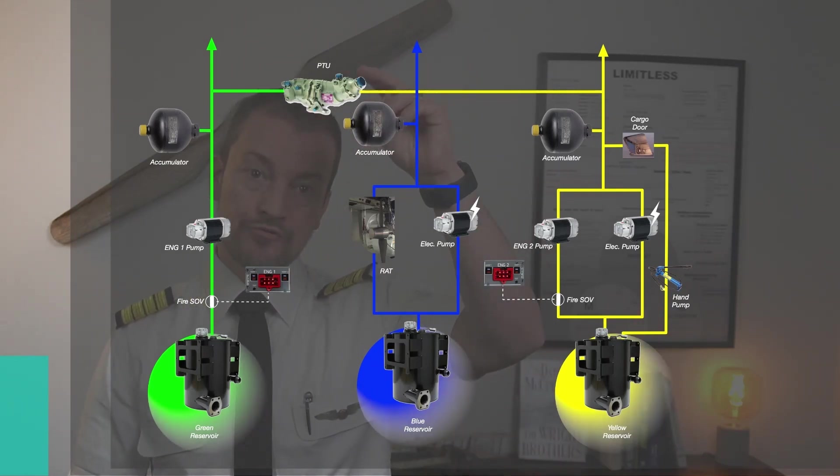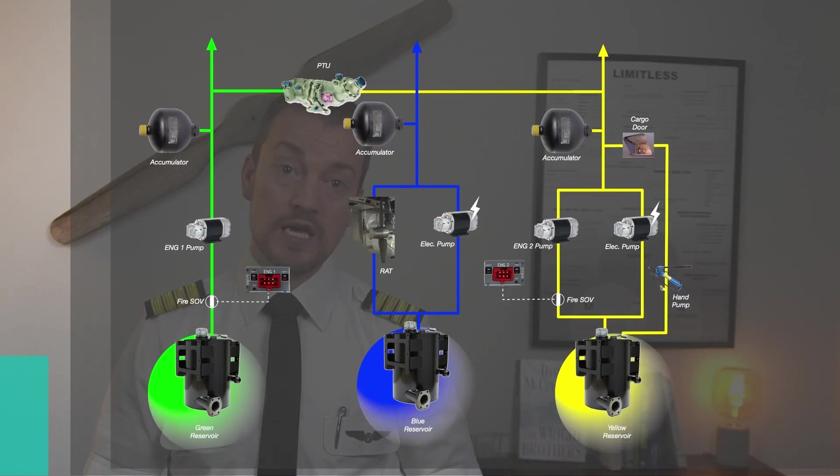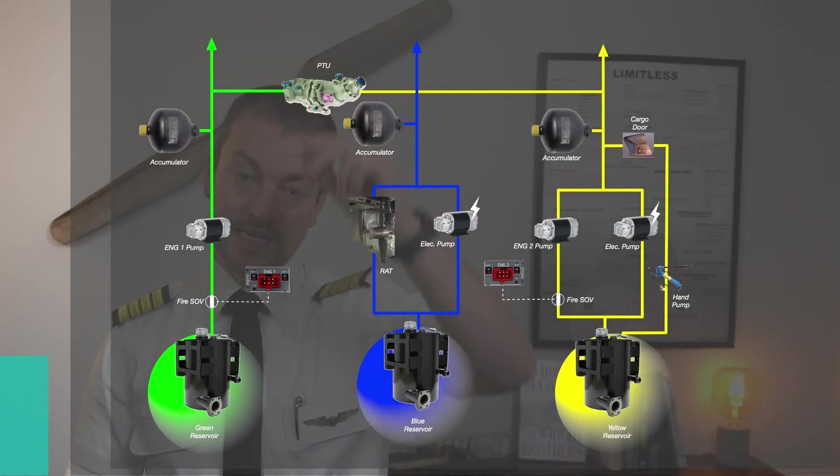Since the PTU is inhibited during first engine start, it will not pressurize the green system even though the pressure difference between the two is more than 500 PSI. PTU starts operating only after second engine start.